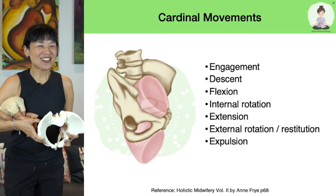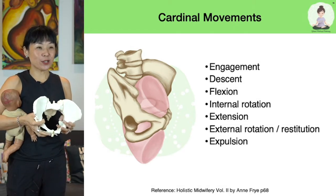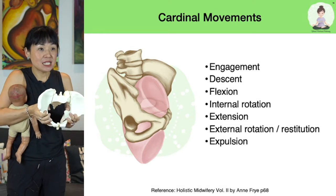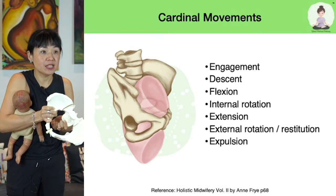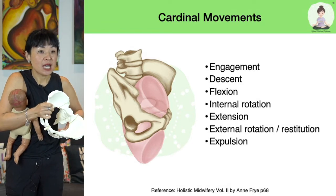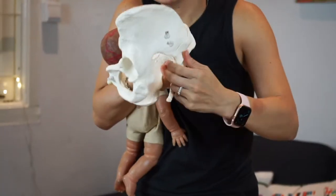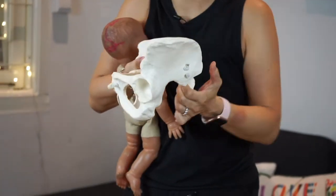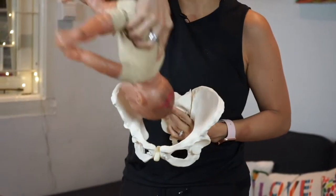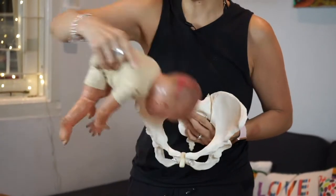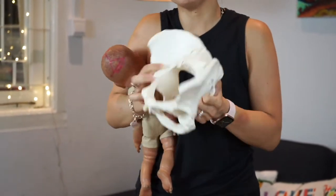What needs to happen for this baby to come through is as she's going into the pelvis, this part of your pelvis is going to open. As your baby's coming out, your pelvis is going to move and your sacrum is going to move to create space. Whilst we cannot control how this baby is going to go in, what we can control is how we can create space within the pelvis.